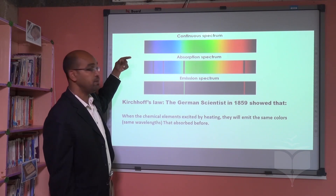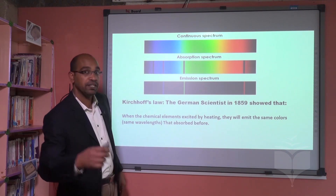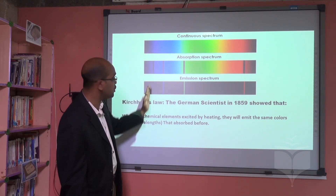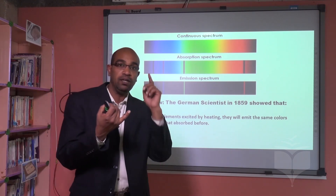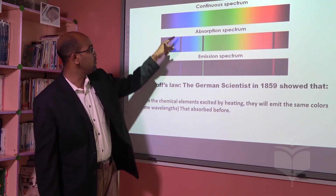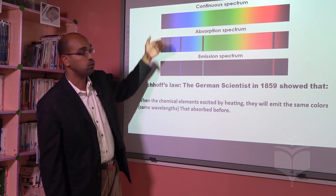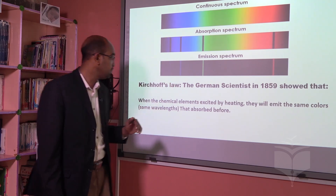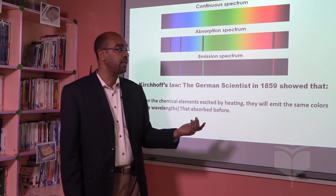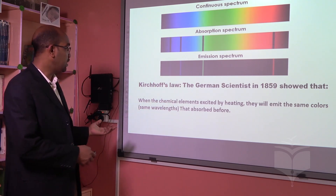According to Kirchhoff's law, if a chemical element absorbs a color — appearing as a dark line — when it gets emitted again, it will be emitted as a colored line in the same position, because it must be the same wavelength and same frequency. So line by line: one is absorbed, and then one will be emitted again. This is Kirchhoff's law, announced in 1859.